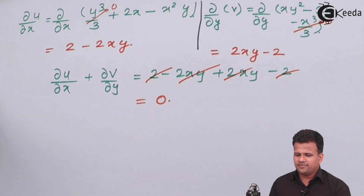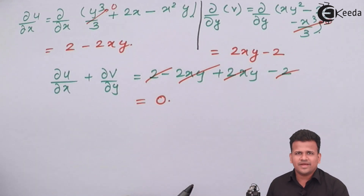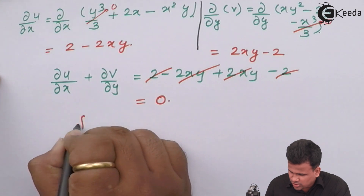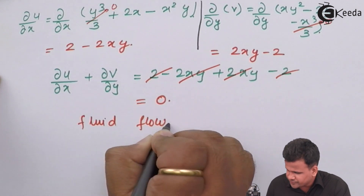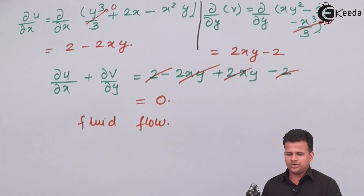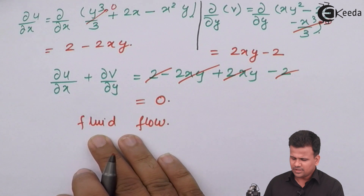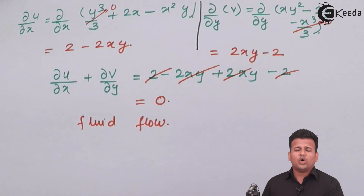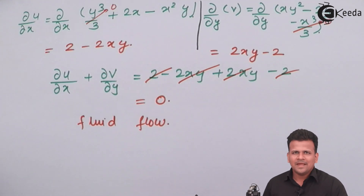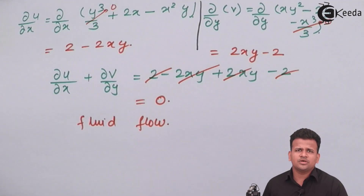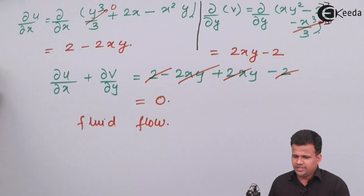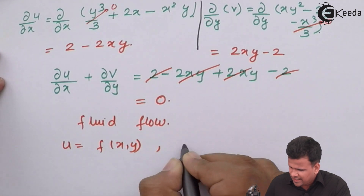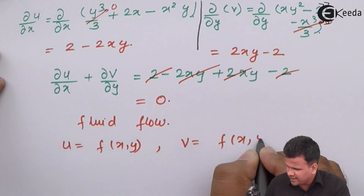This means that whatever equations of velocity we have — which are functions of X and Y — both will contribute to the flow of the fluid. That means it is a case of fluid flow. Now we are sure that the fluid is going to flow, but what kind of flow it is we do not know. We have to check whether this case is rotational or irrotational. U is a function of X and Y, and V is also a function of X and Y.